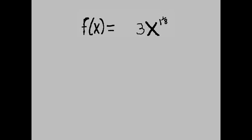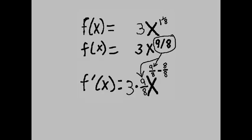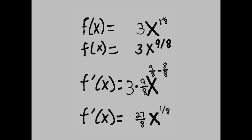f prime of x equals 3x to the 1 and 1 eighth power. Let's rewrite: f of x equals 3x to the 9 eighths power, because 1 equals 8 eighths, and 8 eighths plus 1 eighth equals 9 eighths. So f prime of x equals 3 times 9 eighths x to the 9 eighths minus 8 eighths power, that equals 27 eighths x to the 1 eighth power.